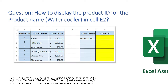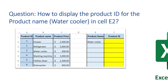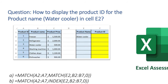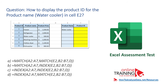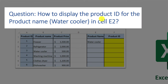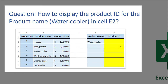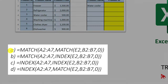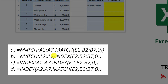Excel assessment test questions used to always include VLOOKUP, but now you are tested on index and match functions, which are a more sophisticated equivalent of VLOOKUP. For example, how do you display the product ID for the product name 'water cooler' in cell E2? You're presented with choices: nested MATCH inside MATCH, nested INDEX inside MATCH, nested INDEX inside INDEX, and nested MATCH inside INDEX. Which one is the right answer?